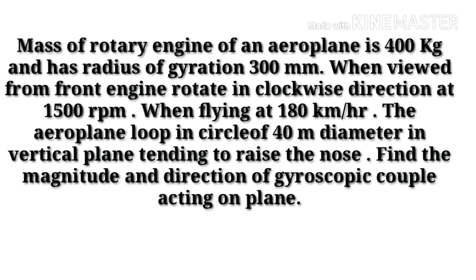Here is the example: the mass of the rotary engine of an aeroplane is 400 kg and has a radius of gyration of 300 mm. When viewed from the front, the engine rotates in the clockwise direction at 1500 rpm. When flying at 180 km/h, the aeroplane loops in a circle of 40 m diameter in the vertical plane, tending to rise the nose. Find the magnitude and direction of the gyroscopic couple acting on the plane.